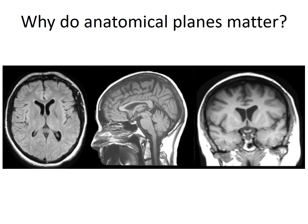Medical software presents data from patients differently depending on anatomical plane. These are CAT scans of a human brain — the same brain, but prepared in different anatomical planes. The image on the left is a transverse plane. The image in the middle is a mid-sagittal image. The image on the right is a coronal plane. These anatomical planes are very important because they show us different images of the same basic structures, just presented differently.